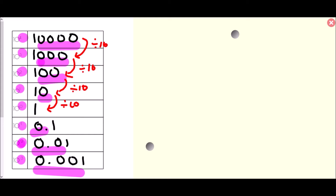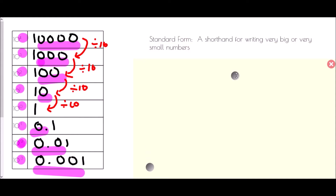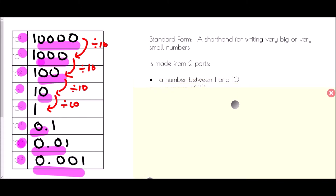These powers are important because of what standard form is and does. Standard form is a shorthand for writing either very big numbers or very small numbers. It is always made from two parts: a number between 1 and 10, multiplied by a power of 10.